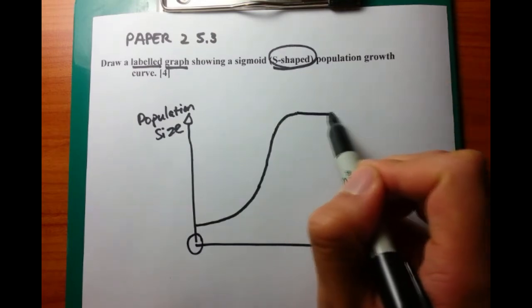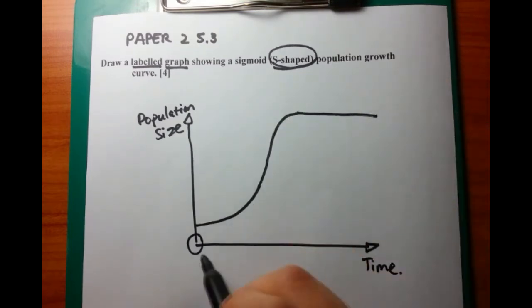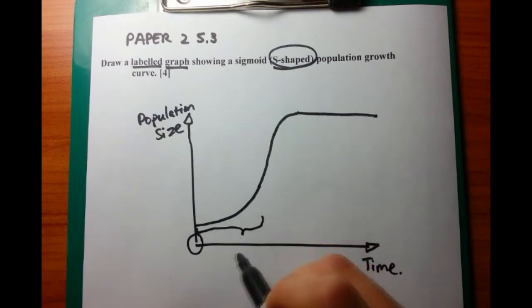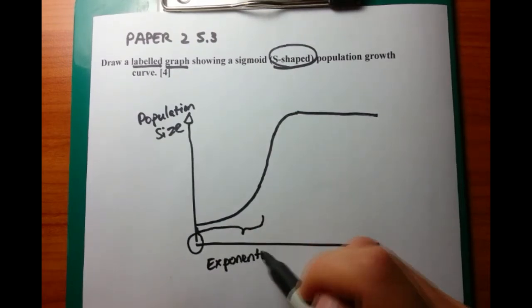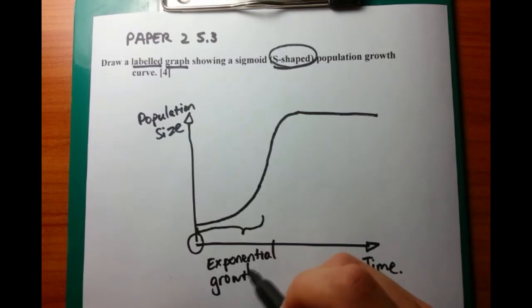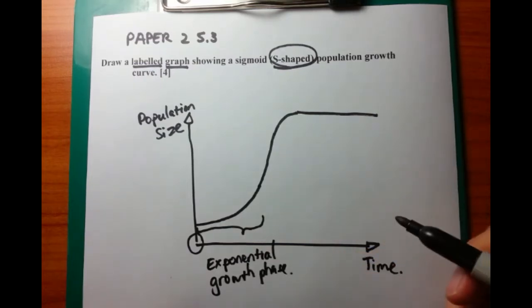So now we want to draw the S-shaped population growth curve. And there are three different parts to it. The first part is the exponential growth phase. And this is where there's rapid growth because there are plenty of food, plenty of habitat, and not many predators, not many deaths.